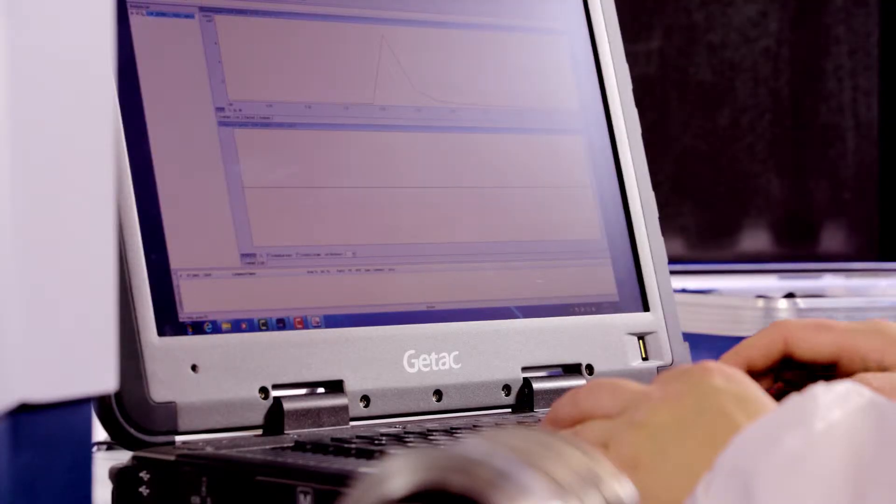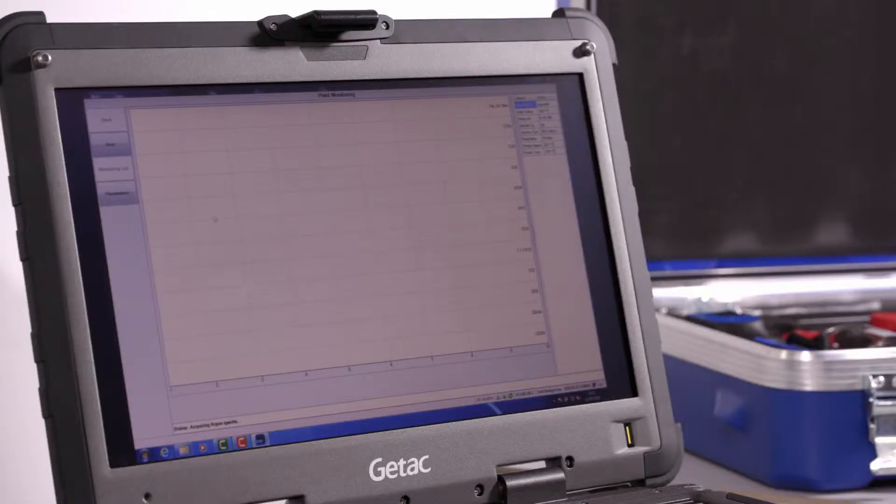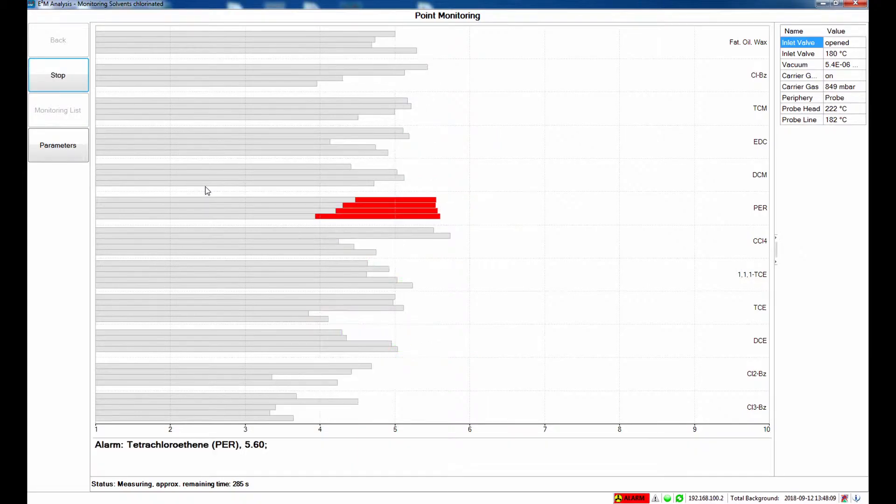The analysis times using E2M are short, ranging from a few seconds for air pollutants with the air surface probe to 20 minutes for a full range GC separation and identification.